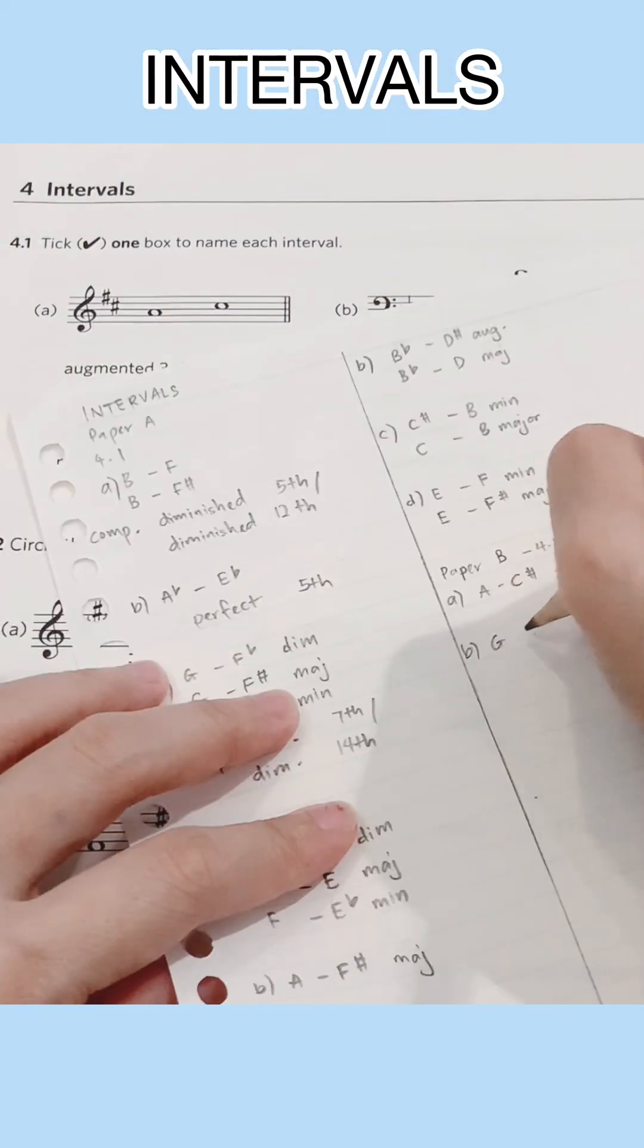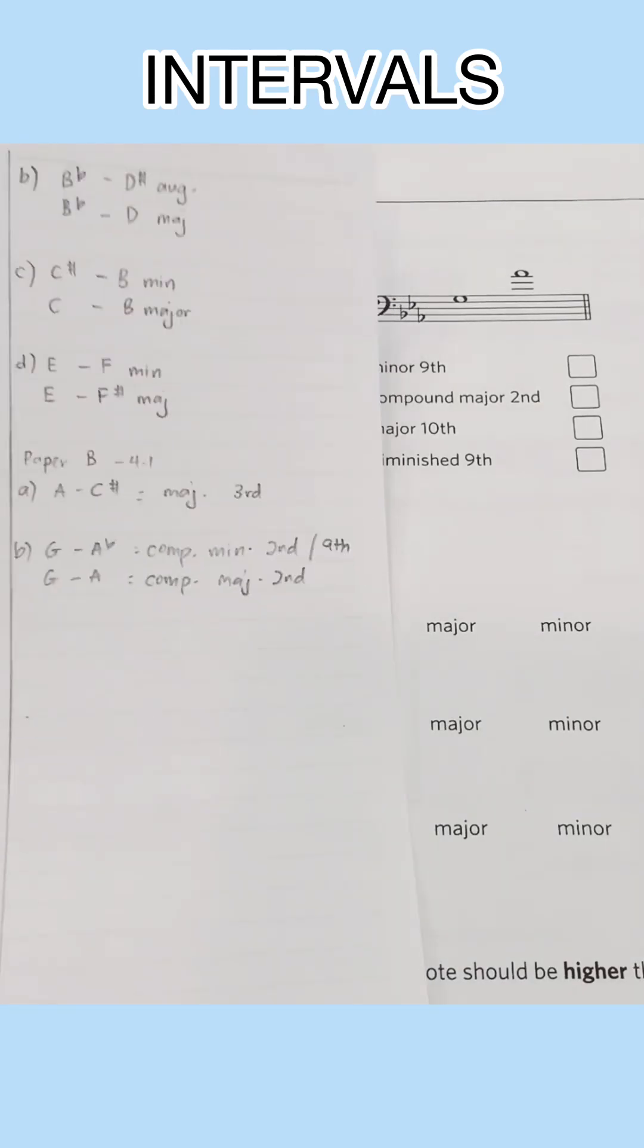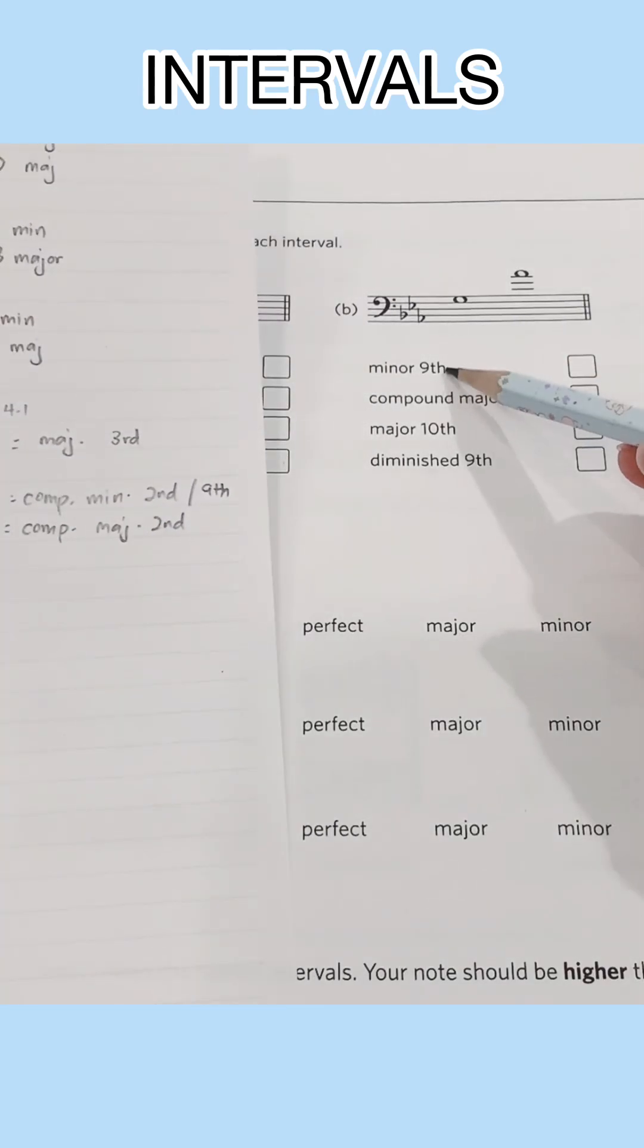Next we have G to A flat which could be a compound second or a ninth. G to A is a major ninth. G to A flat is a minor ninth. So this is the answer.